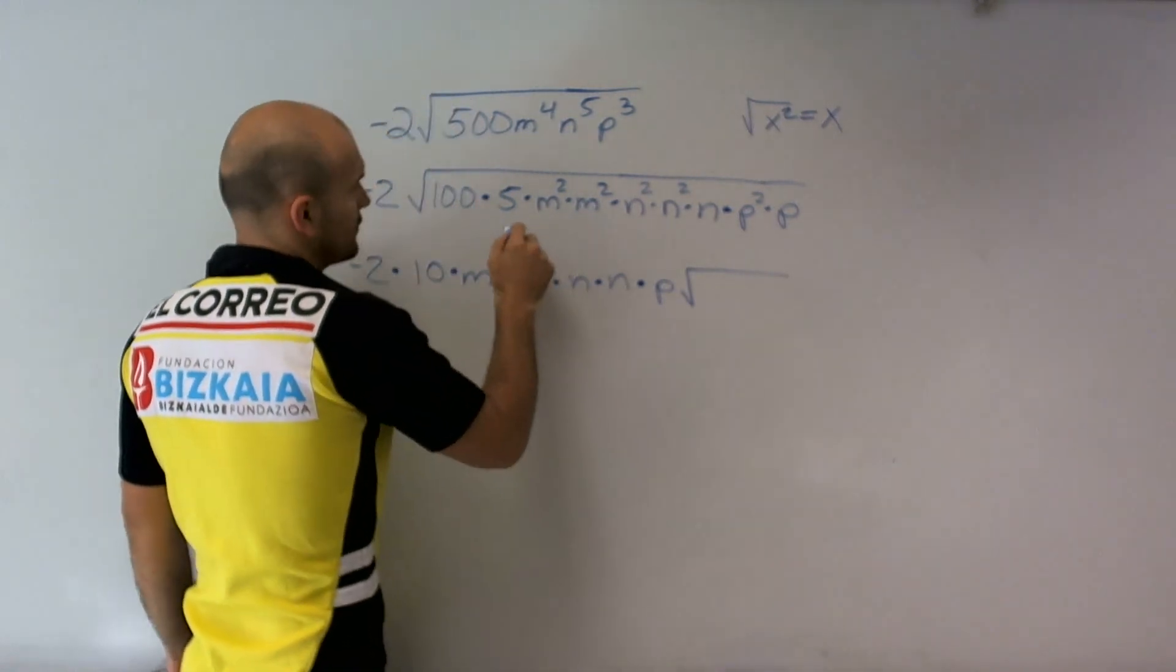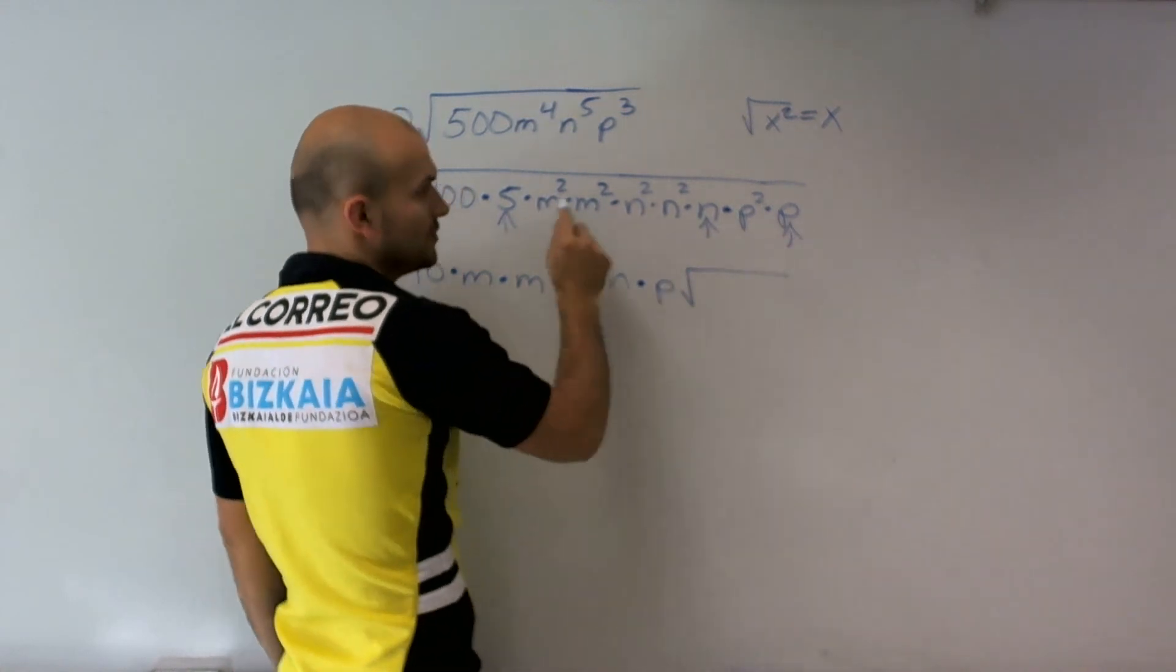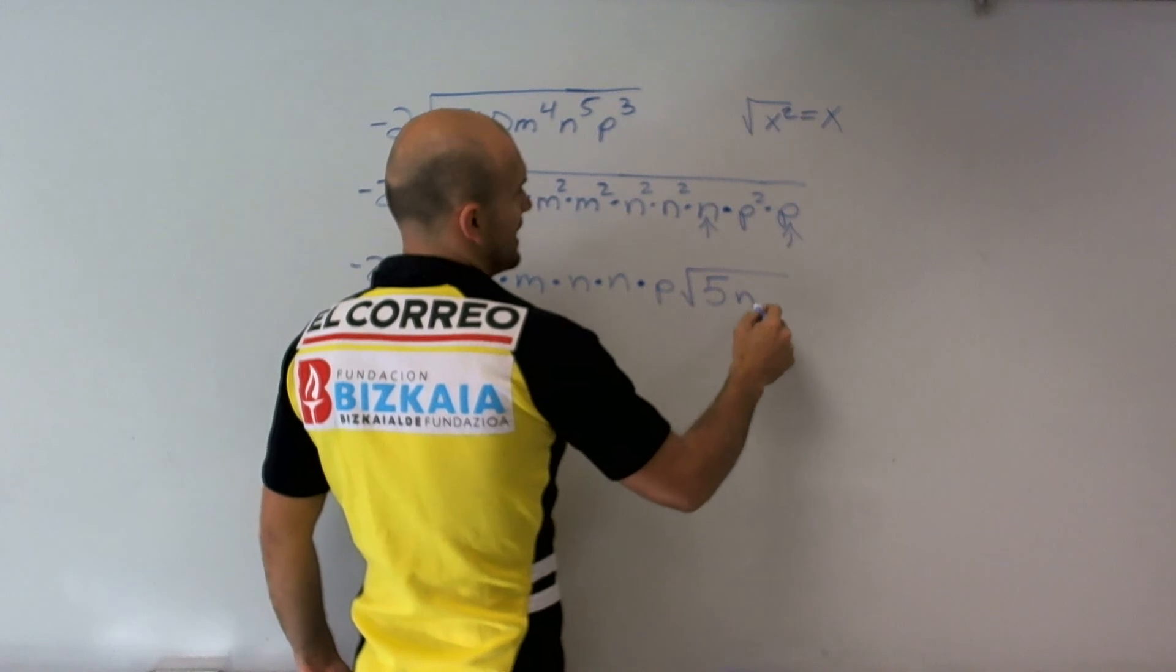The square root of p squared is just going to be p as well. Then what was left over? I had a 5, this n, and this p. So those are going to remain under my radical symbol: 5np.